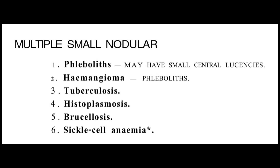This differential of multiple small nodular calcification is also shared with histoplasmosis, brucellosis, and sickle cell anemia — all of which can present with multiple small nodular calcifications within the splenic parenchyma.